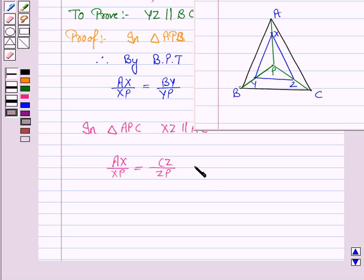Now, AX upon XP is equal to BY upon YP and also AX upon XP is equal to CZ upon ZP. So, from equations 1 and 2,